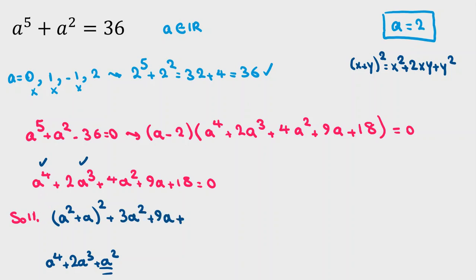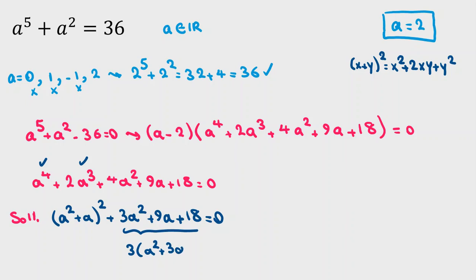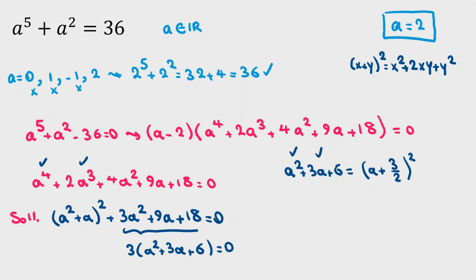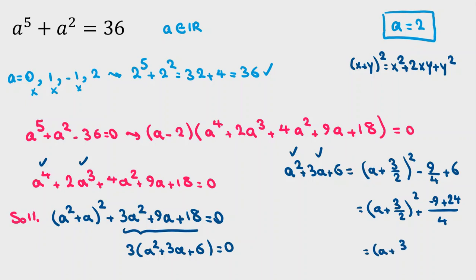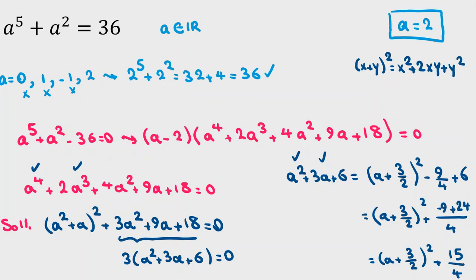What remains is 3a squared plus 9a plus 18 equals 0, and factoring out 3 gives a squared plus 3a plus 6 equals 0. Completing the square: a squared plus 3a plus 6 equals (a plus 3/2) squared minus 9/4 plus 6. Calculating 6 minus 9/4 gives 24/4 minus 9/4 which is 15/4. So this becomes (a plus 3/2) squared plus 15/4.